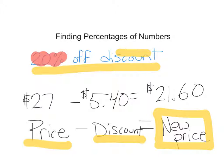So, to solve this problem, we set up our formula, $27 minus the discount. And then we take the time to calculate 20% off separately and bring it back into our formula to find the new price. Calculating sales tax in Pennsylvania is very similar. Sales tax is 6% of the price.